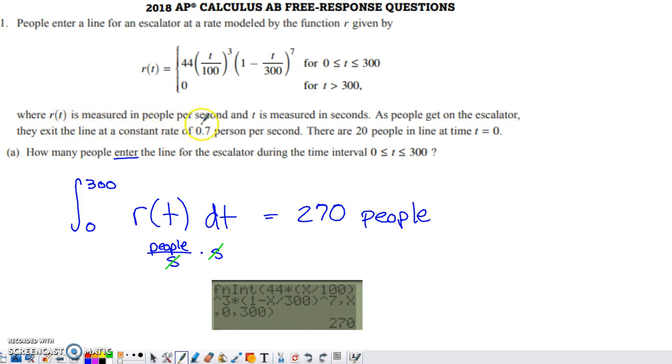The units of R of T are people per second. T is being measured in seconds. People get on the escalator so they're exiting the line at a constant rate of 0.7 people per second. There are 20 people in line at the beginning of this time frame.